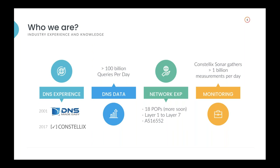Our AS is 16552 — you can look at it and see where we're currently peered. That's really what's going to be powering a lot of the decisions we're doing in DNS over the next few years. In our Constellix Sonar product, we're currently gathering over 1 billion measurements per day. So we've got over 100 billion DNS queries and over a billion DNS measurements in Constellix Sonar — and we're going to put that all together to give people better security and better products and services.